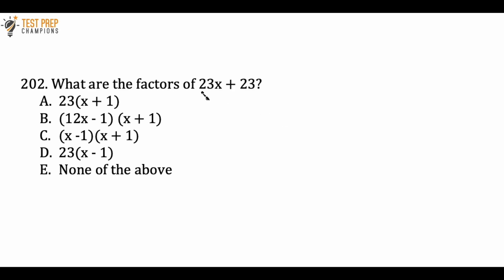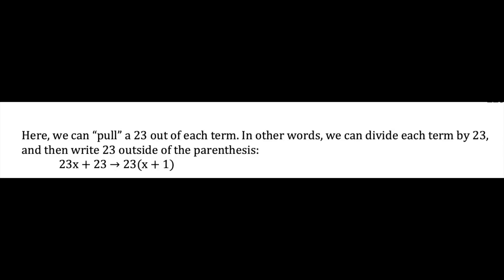So what we have to see here is that both terms have a 23 in them. So we can pull the 23 out, and we can write 23(x plus 1). Now we can see here that if we took this 23 and distributed it, so if we did 23 times x, which would become 23x, plus 23 times 1, which is 23, we would get back to the original scenario, which was 23x plus 23. So A is the correct answer here.